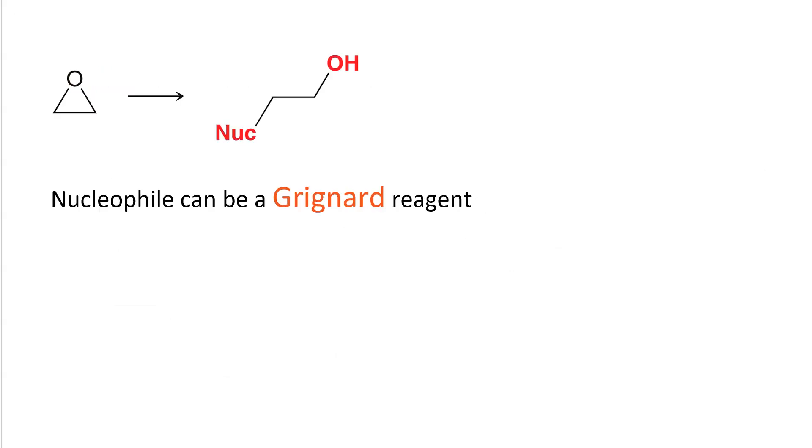Just as we used Grignards with carbonyls to install an R group on the same carbon as the alcohol, we can use a nucleophile with an epoxide to install an R group adjacent to the resulting alcohol.